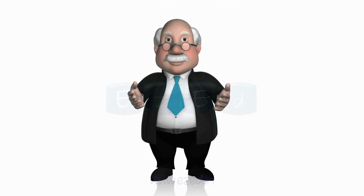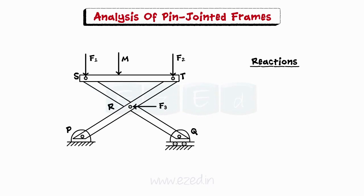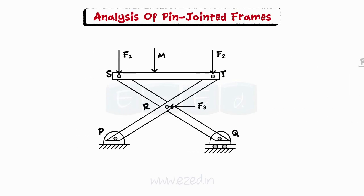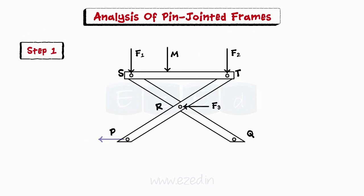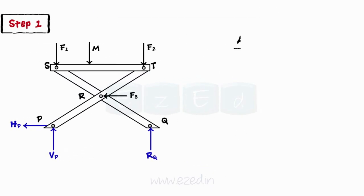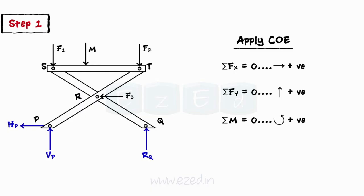The complete analysis of a pin-jointed frame primarily consists of calculation of the reactions generated at all pin-connected joints due to external loads. The following steps are followed while analyzing a pin-jointed frame: draw the free body diagram of the entire frame and apply conditions of equilibrium — sum of all forces in the x-direction is zero, sum of all forces in the y-direction is zero, and sum of moments of all forces is zero.